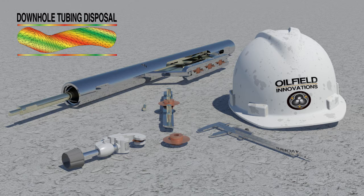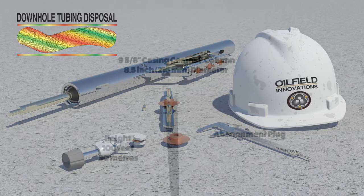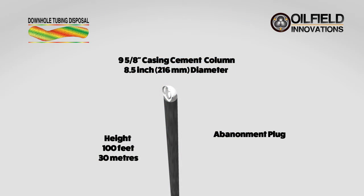Slicing the tubing makes it easy to push a whole piece of tubing into a split piece of tubing, so as to provide a space to place a cement abandonment plug. Oil and gas wells generally have 9 and 5/8 inch production casing or smaller, which has an internal diameter of 8 and a half inches or 216 millimeters.